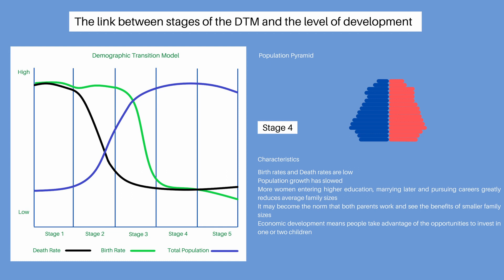In stage 4, both birth rates and death rates are low, and population growth has slowed. Improved educational opportunities for women make a big difference. More women entering higher education, marrying later and pursuing careers greatly reduces average family sizes. It may become the norm that both parents work and see the benefits of smaller families. Economic development allows people to take advantage of the opportunities to invest in one or two children. The population pyramid now has wider bars at the top, showing that people are living longer, and a narrowing base shows a falling birth rate, with fewer children joining the population.